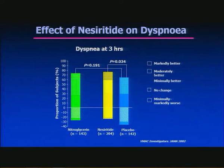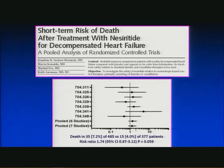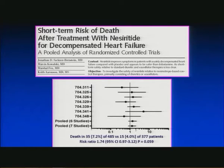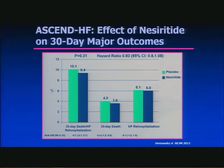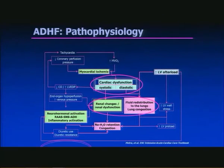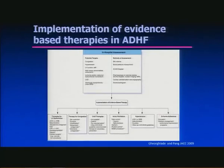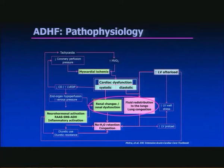However, concern arose from a meta-analysis suggesting nesiritide might increase death: 35 deaths in 485 patients on nesiritide versus 15 on placebo, with a risk ratio of 1.74, though this did not reach statistical significance. The subsequent ASCEND-HF trial showed no reduction in early or longer-term morbidity and mortality, and only a modest reduction in dyspnea at 30 days. Overall, nesiritide did not perform well, and its use has largely fallen out of favour.